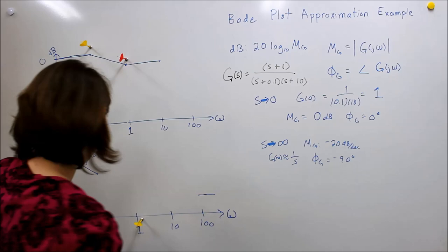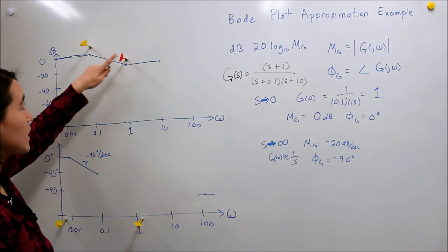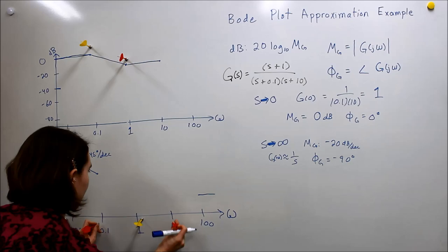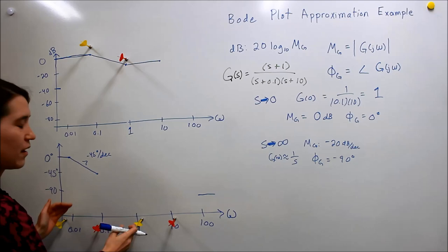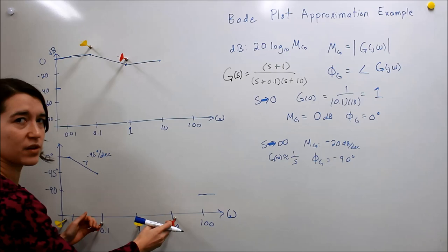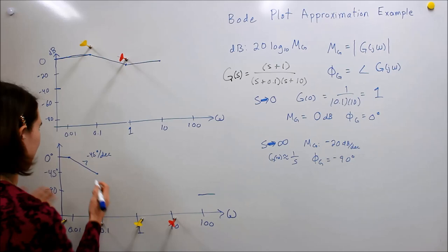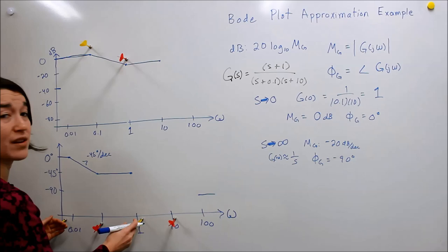Now let's look at how the zero at 1 affects the phase. The zero affects the phase over plus or minus one decade, so from 0.1 to 10. Once we hit 0.1, we get the effect of this zero increasing phase by positive 45 degrees per decade. But between 0.1 and 1 we're also still decreasing by 45 degrees per decade from the pole — so the two effects cancel out, and we stay approximately at negative 45 degrees.